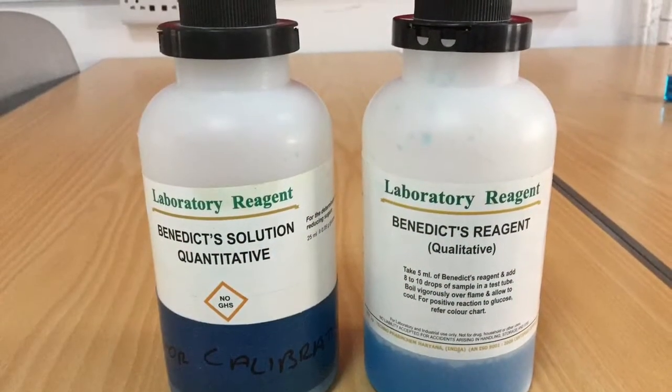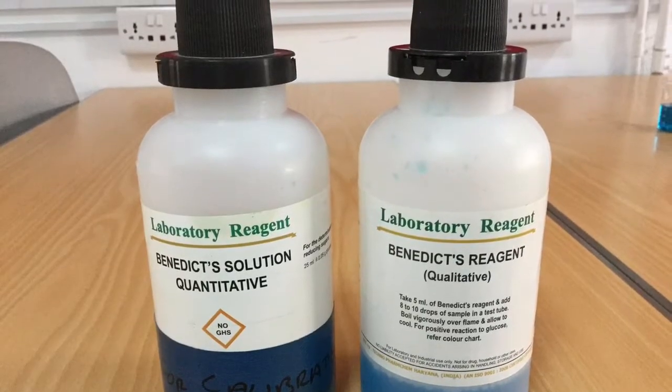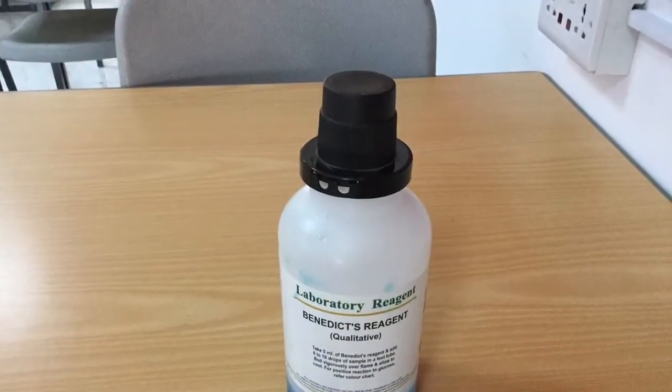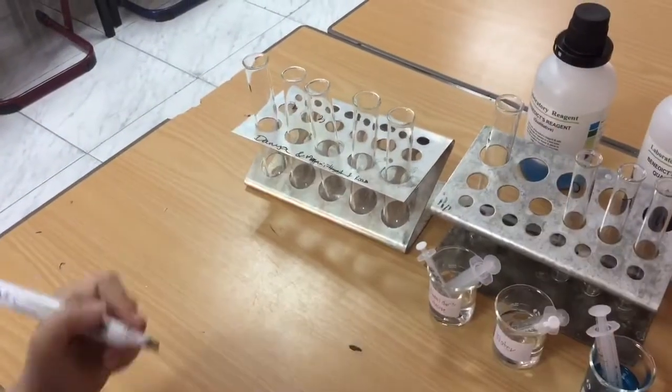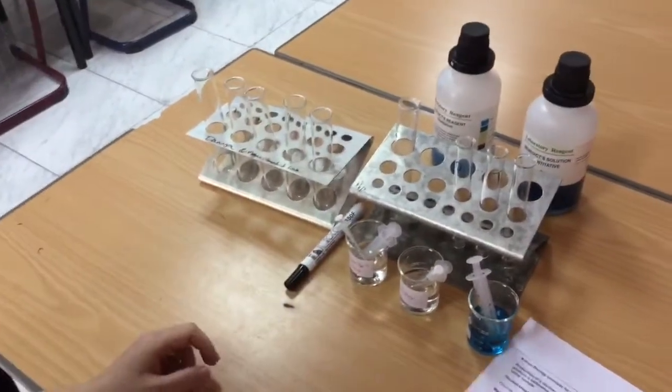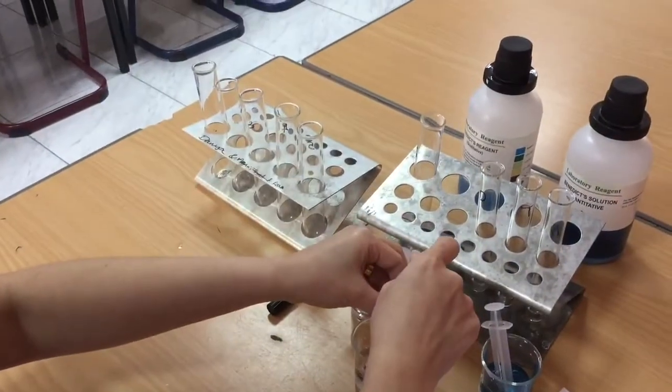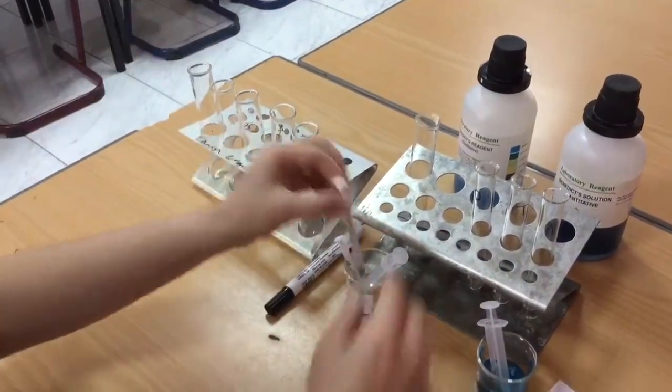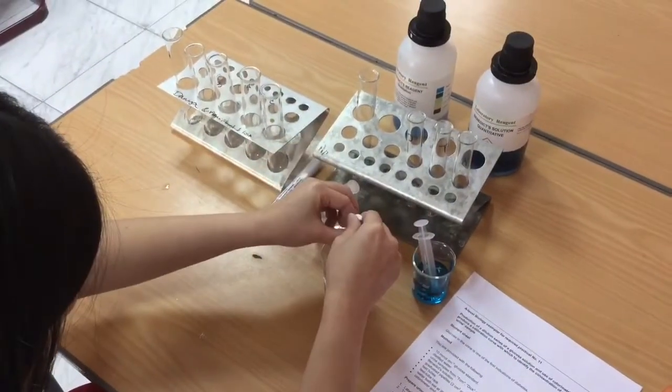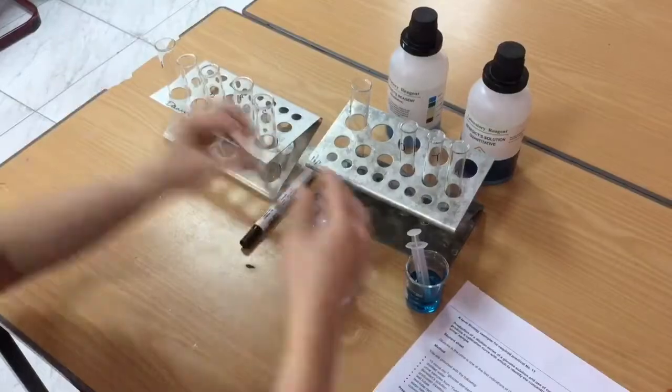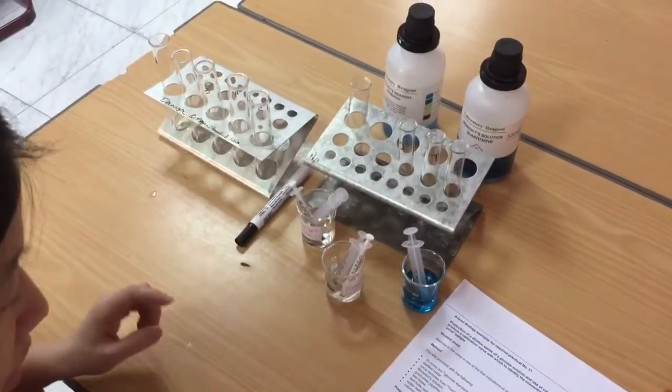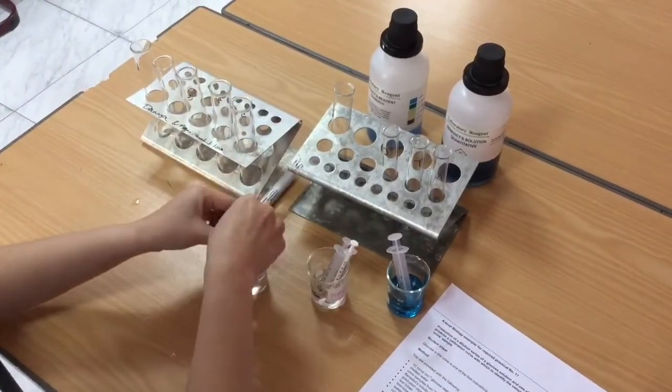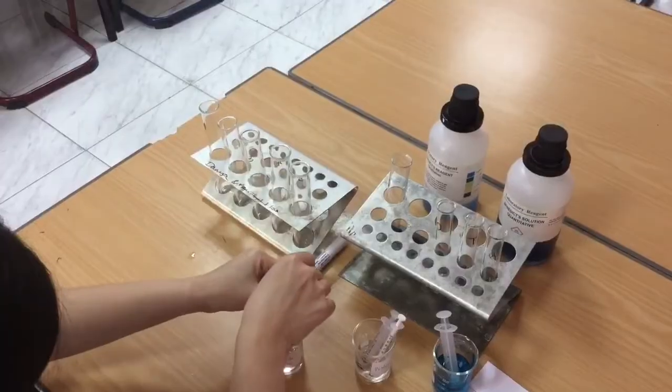In this method, we're going to be using the qualitative Benedict's reagent. A qualitative reagent tells us if there's something there or not. However, this reagent can be considered semi-quantitative because, depending on the color change, it represents the concentration of glucose in the solution at varying concentrations. A red brick precipitate representing the most concentrated glucose solution. And this is because glucose is a reducing sugar. A reducing sugar donates electrons and the copper 2-sulfate is reduced.